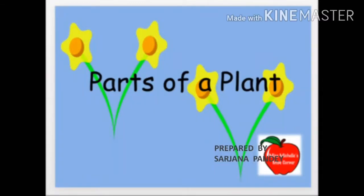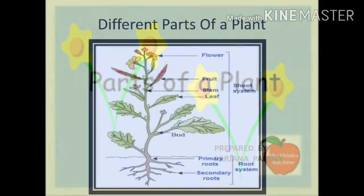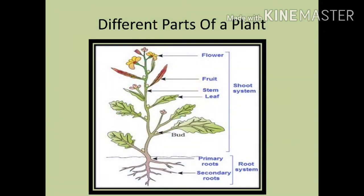Good morning everyone. Today we are going to discuss parts of a plant and its function. The different parts of a plant are divided into two: shoot system and root system.